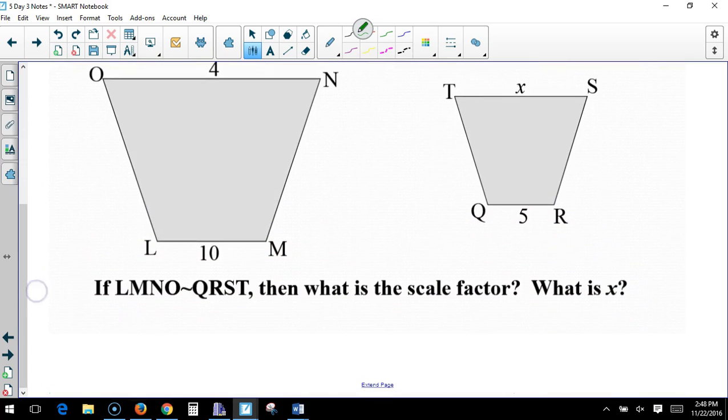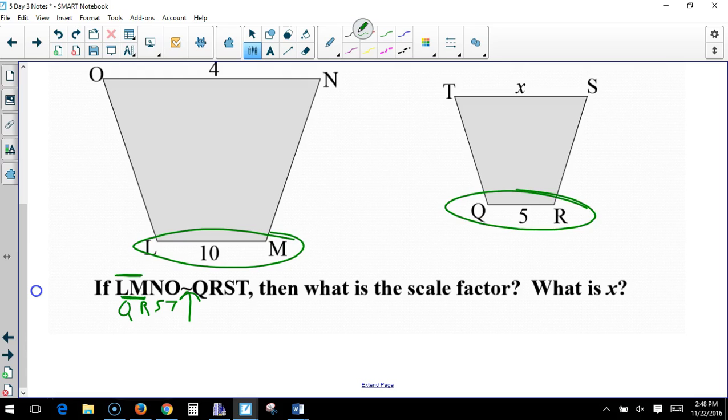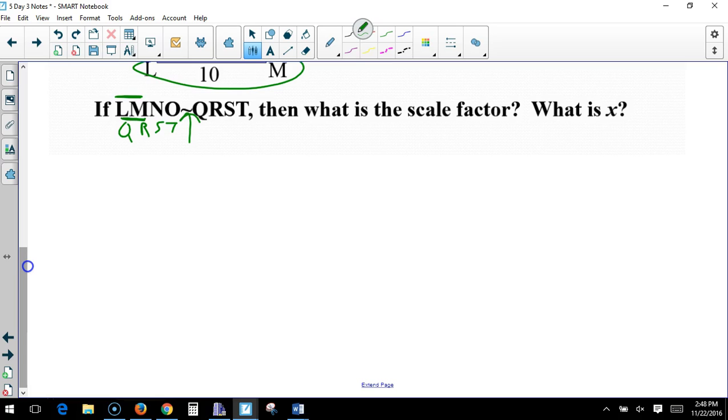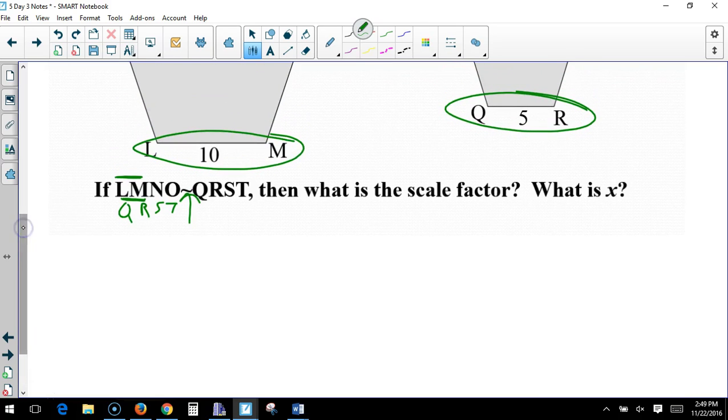If two polygons are similar, the ratio of the lengths of their two corresponding sides is called the scale factor. Now, in this case, notice, it says if LMNO is similar to QRST, what's the scale factor? What is x? Now, let's think about it. We want to find, just like we did before, QRST. We can line them up just like that. So, LM corresponds to what? QR. Now, remember how we talked about the order in which you read them? So, it says LMNO is similar to QRST.